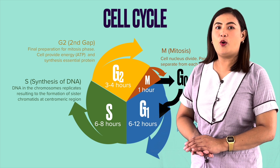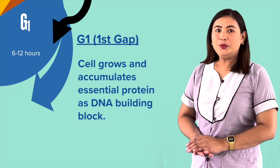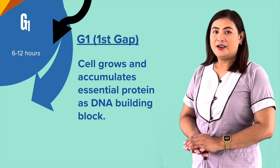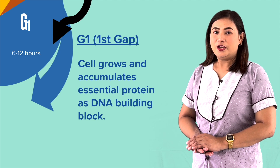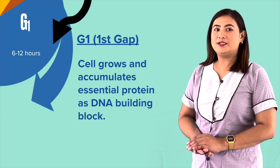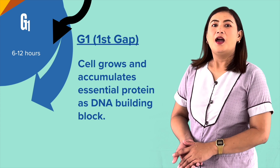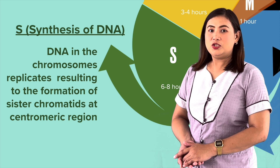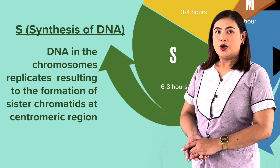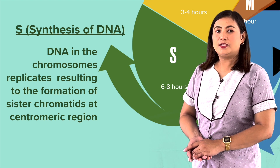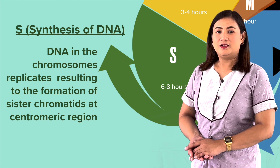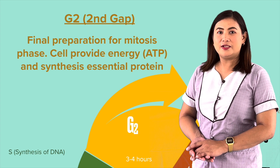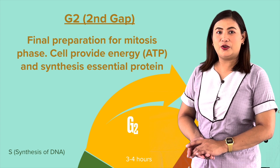Let us begin with the G1 phase. In this stage, the cell increases in size and cellular contents are duplicated. The next phase is the synthesis phase, where DNA replicates — each of the 46 chromosomes in humans, or 23 pairs, is replicated by the cell. In the G2 phase, the cell grows more and proteins are synthesized in preparation for cell division.